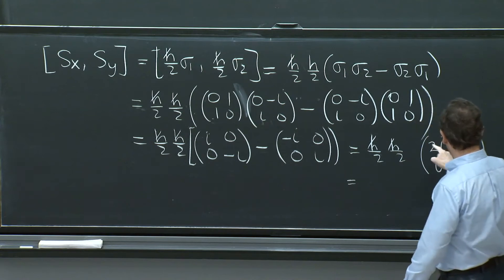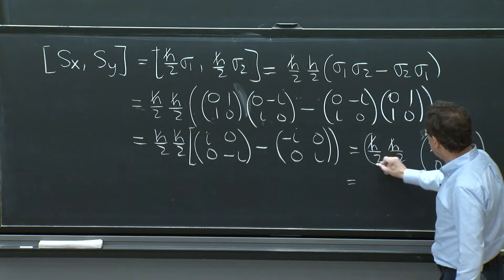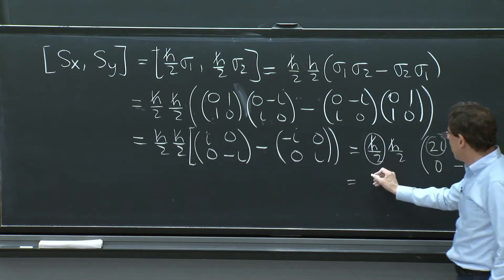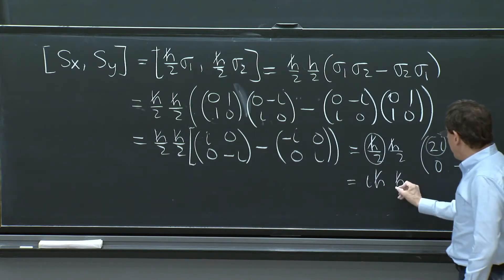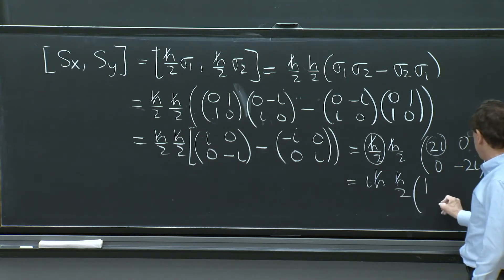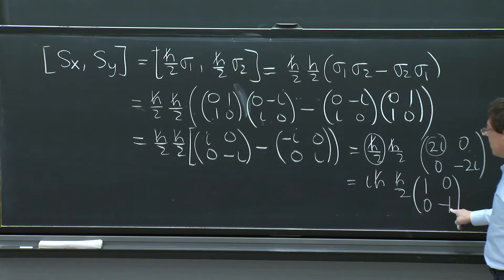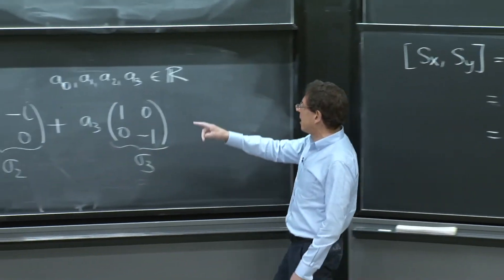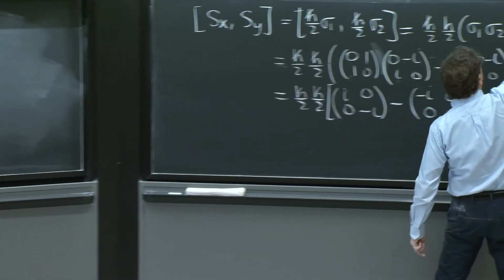Which is H bar over 2 times H bar over 2 times, oh, they don't cancel. They seem to cancel, but there's a minus. It's actually twice of those. So 2i minus 2i, 0, 0. And here we get a 2 cancels this and an i goes out. So I'll have an i with this factor and the i out is ih bar times H bar over 2 times the matrix 1 minus 1, 0, 0. Somehow it gave that. But H bar over 2, 1 minus 1 is sigma 3. And H bar over 2 sigma 3 is Sz. So this is all Sz.